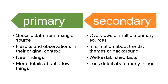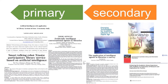Why distinguish between primary and secondary? There are times when one kind of information will be more relevant to your assignment than the other. If you know that the information you need is going to come from a secondary source, don't waste time looking for it in a primary source. Primary sources will give you specific data, results and observations in their context, and more detail about only a few things. Secondary sources will give you overviews of multiple primary sources, information about trends or themes, background information or well-established facts, and less detail about many things.